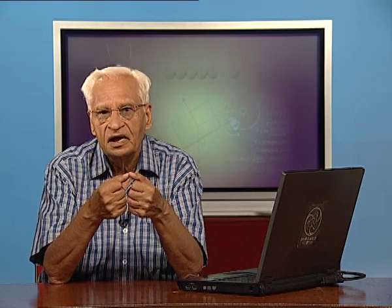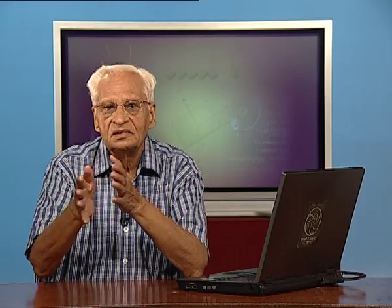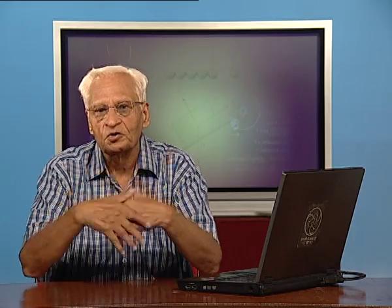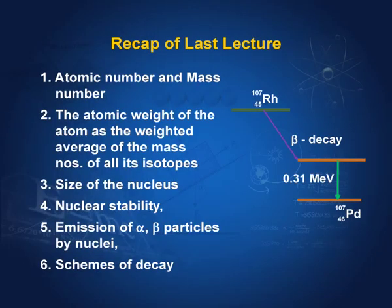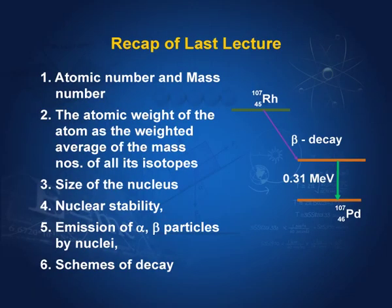We have protons and neutrons. Protons repel each other; neutrons attract each other. The balance between the number of neutrons and protons determines the nuclear stability. And if the nucleus is not stable, then it emits alpha and beta particles and also gamma radiation. Then we discussed some schemes of decay.